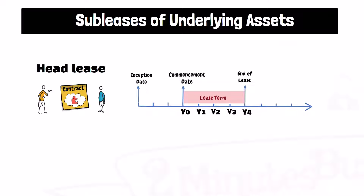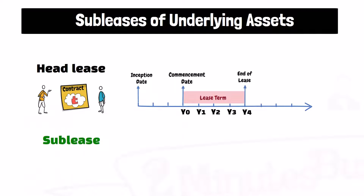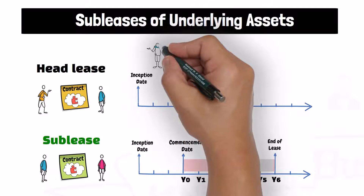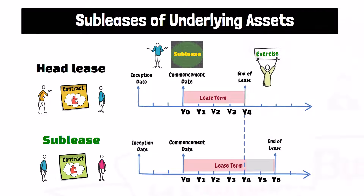Also, the lessee might sublease the underlying asset to a third party for a period that extends after the end of the term of the original lease. If the sublease transaction was on the radar on the commencement date, the lessee would have considered an option to extend the lease term that was not considered when assessing the lease term on the commencement date.